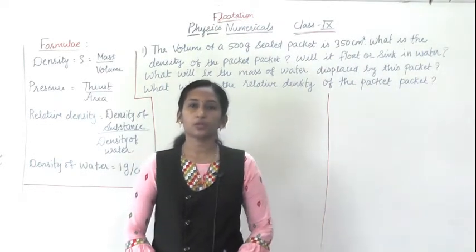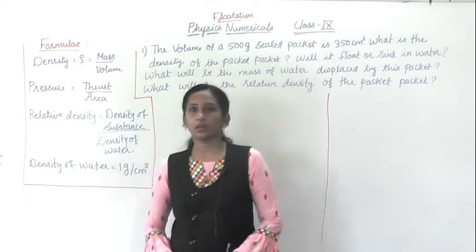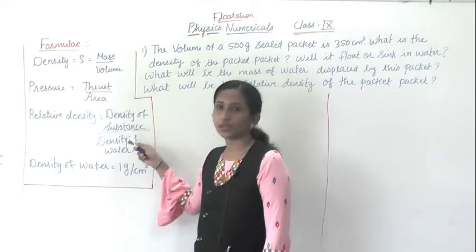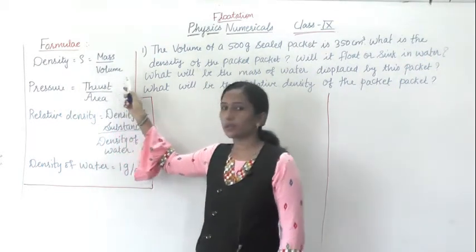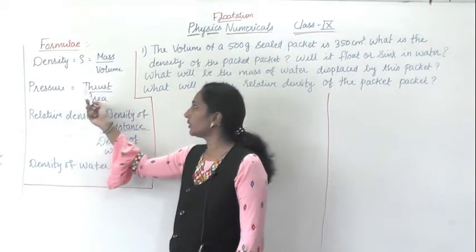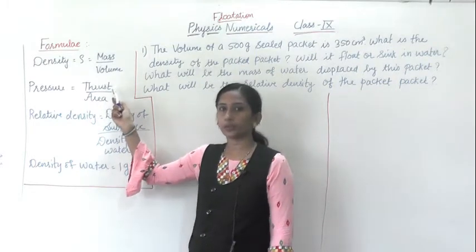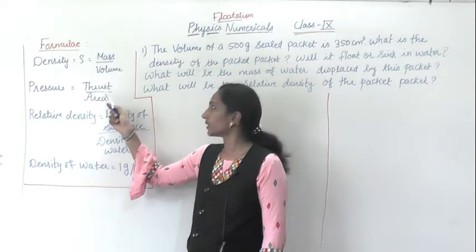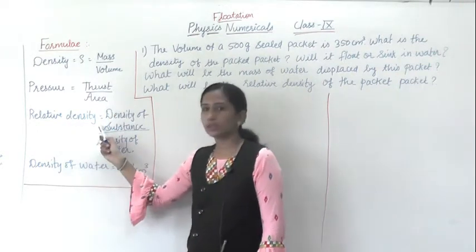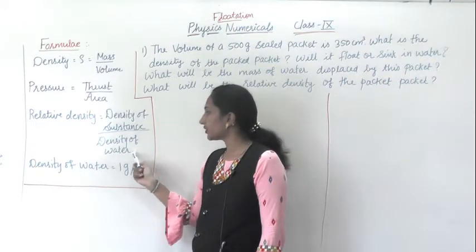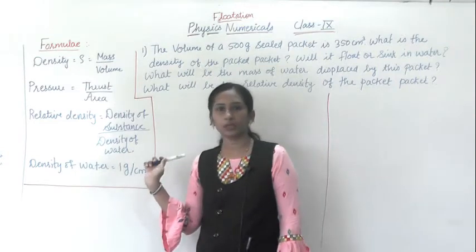Good evening students, today we are going to study the numericals of the part flotation. First we will see the formulas which are coming in this part. The first is density: rho equals mass upon volume. The second is pressure equal to thrust upon area, where thrust is the force acting vertically or perpendicular to the surface. The third is relative density, which is the density of the substance divided by the density of water, where density of water is 1 gram per centimeter cube.